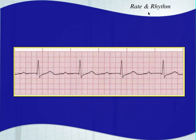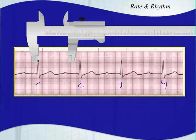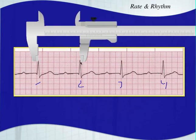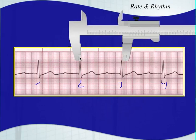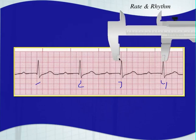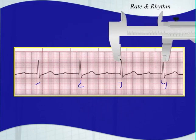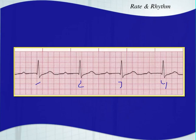This one you can tell is slow right off the bat — it's a six-second strip with only four complexes, giving a heart rate of 40. Let's see if it's regular. From the long-distance view it looks like it is, and measuring confirms: pretty regular.